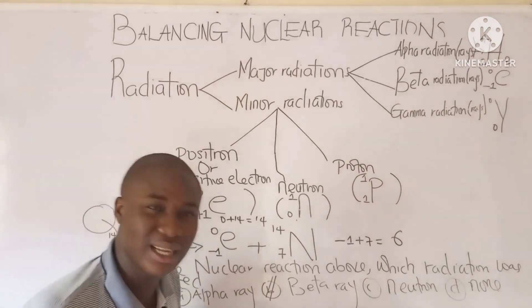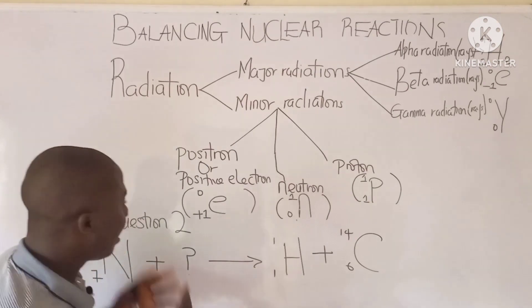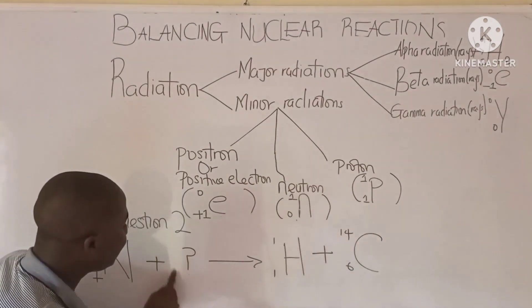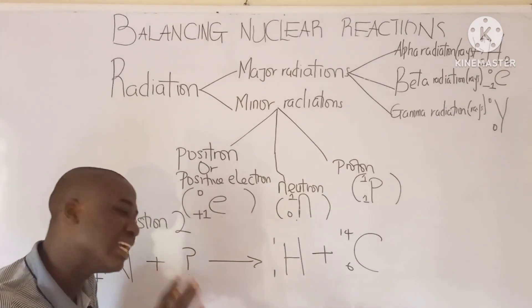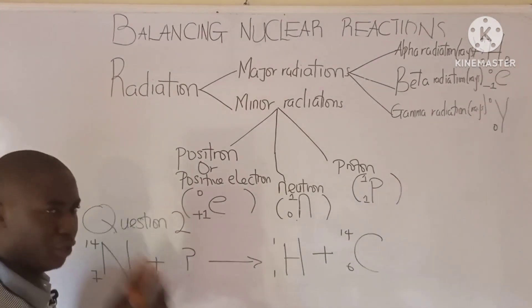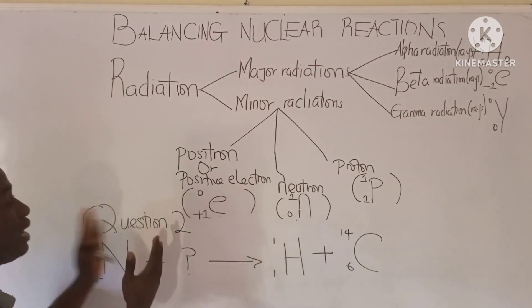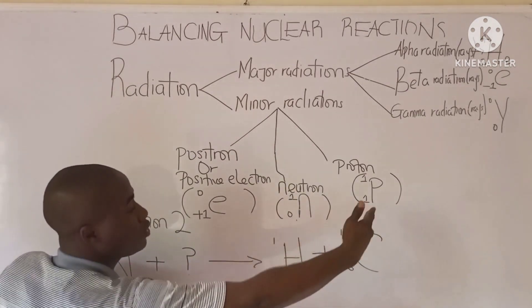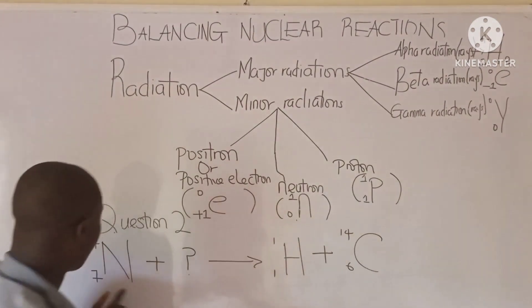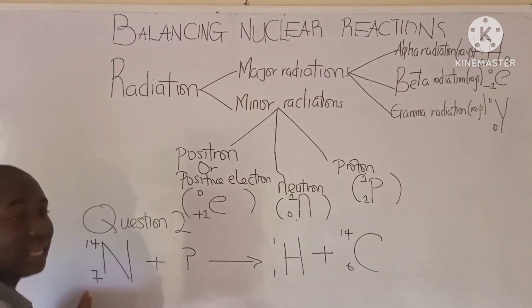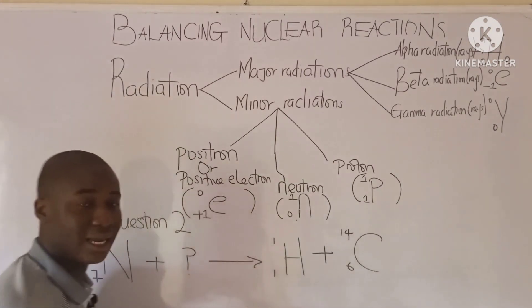Let's move to the second question. It says: identify the atom that is supposed to be here — the question mark. Recall, the superscript values on the left-hand side should equal those on the right-hand side, and the subscript values on the left-hand side should equal those on the right-hand side.